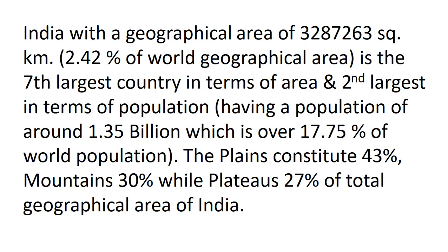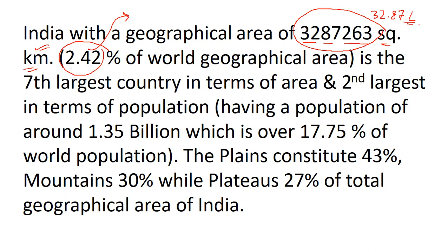India has a geographical area of 3,287,263 square kilometers, which is around 2.42% of the world's geographical area. So India accounts for a small percentage of the world's geographical area. India stands at the seventh position in terms of area — India is the seventh largest country in the world.